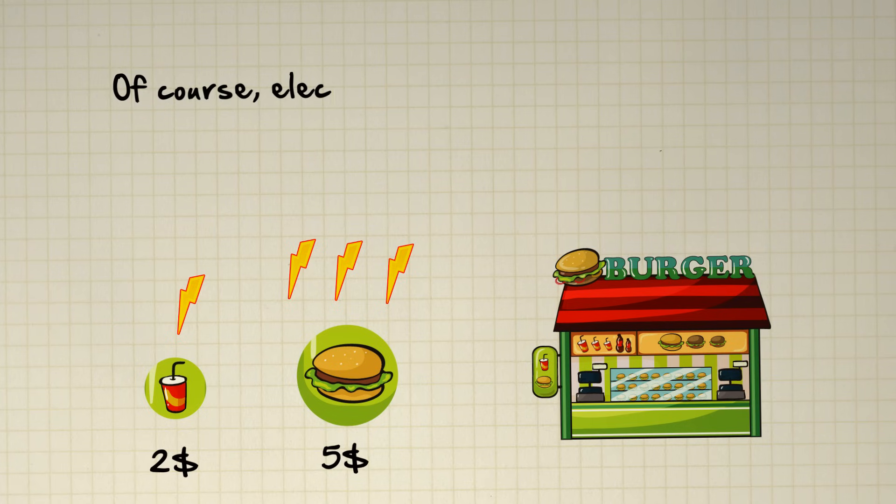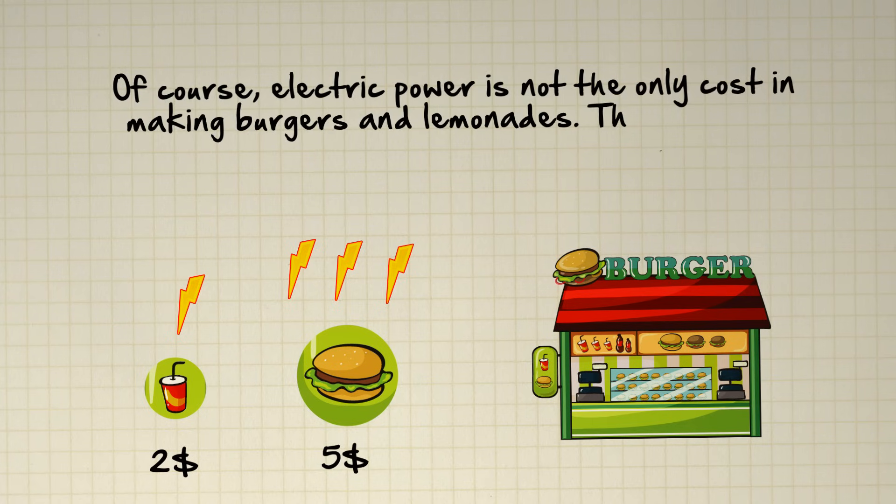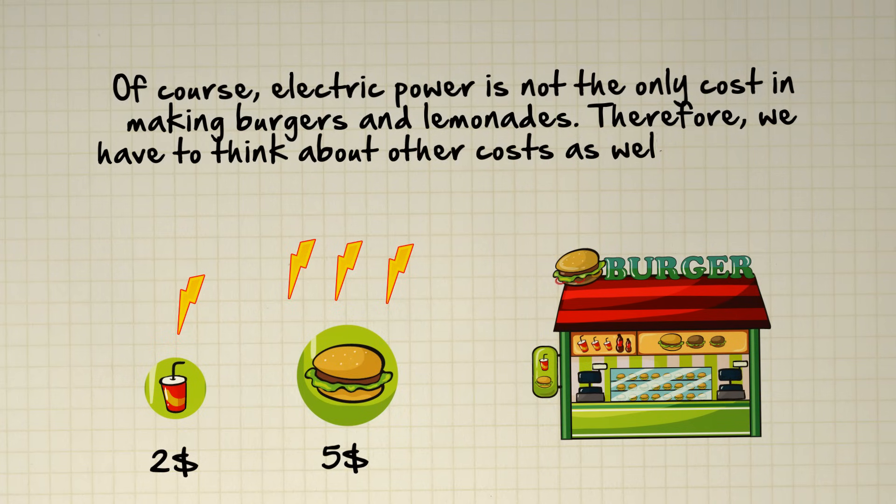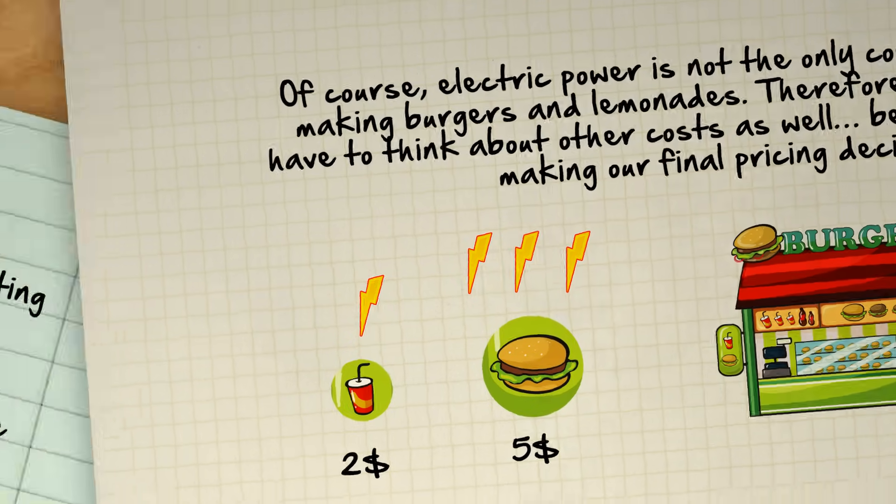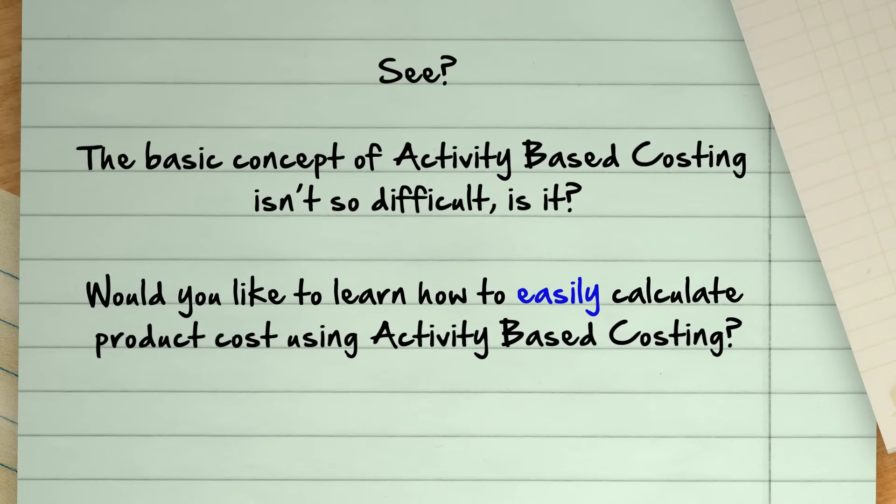Of course, electric power is not the only cost in making burgers and lemonades. Therefore, we have to think about other costs as well before making our final pricing decisions. See, the basic concept of activity-based costing isn't so difficult, is it?